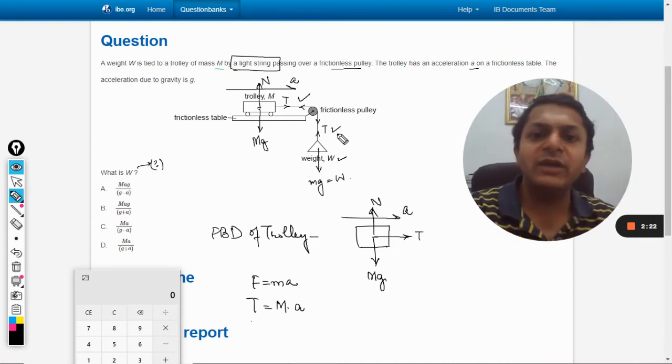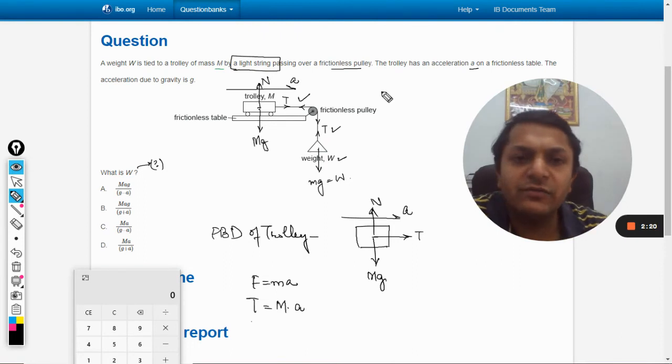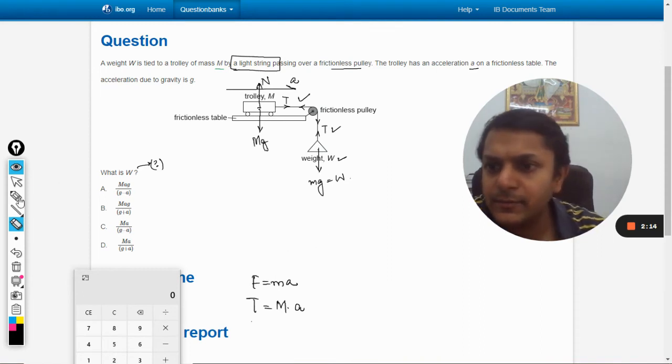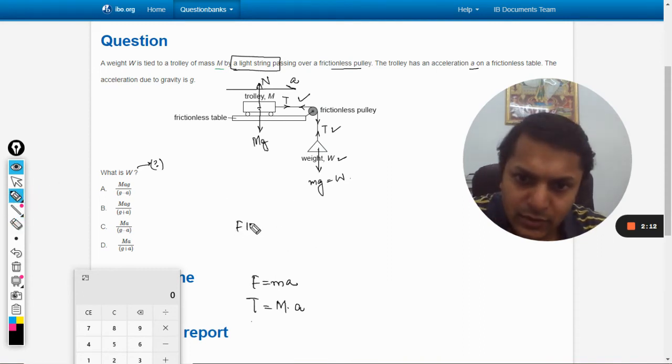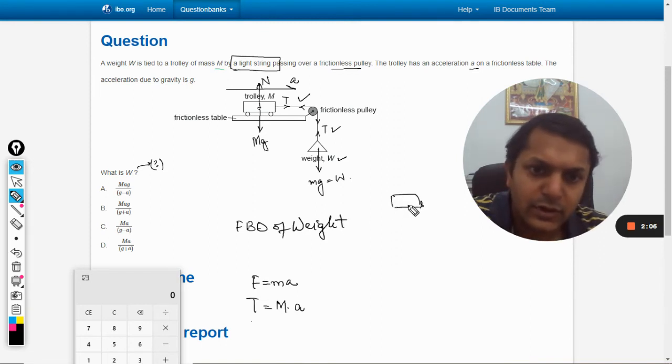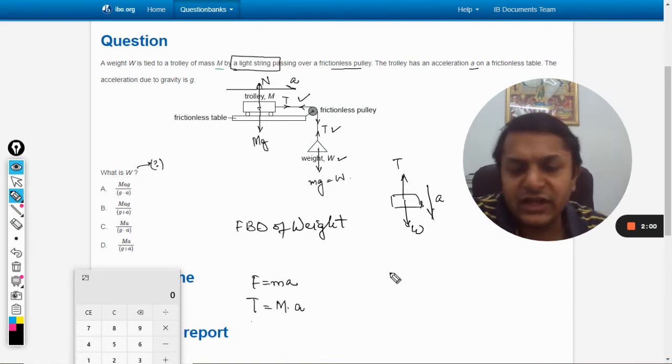When it passes through the pulley, the tension will be T. Now we are going to make the free body diagram of this weight. This is weight W, upward force is T, and it is moving down with an acceleration a.